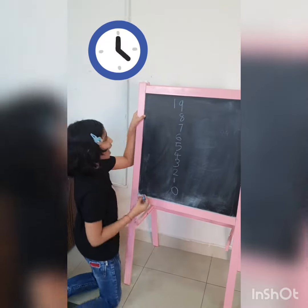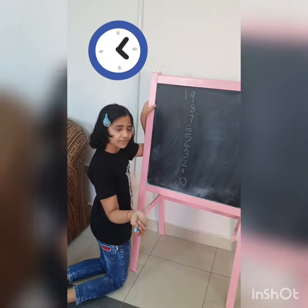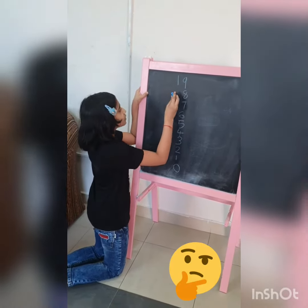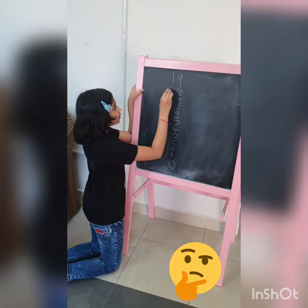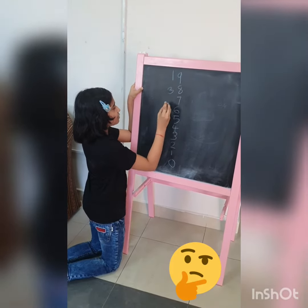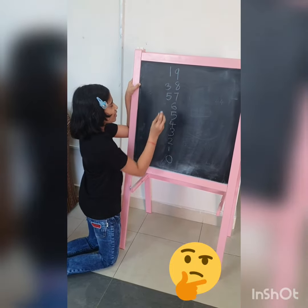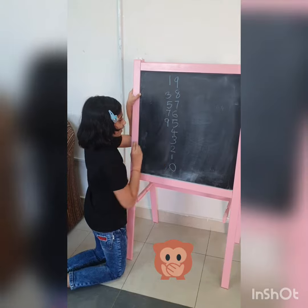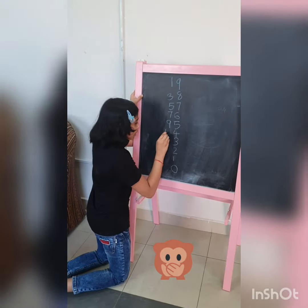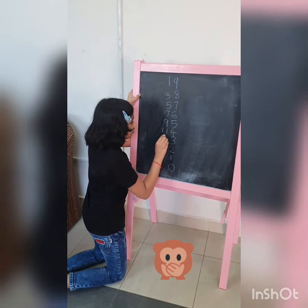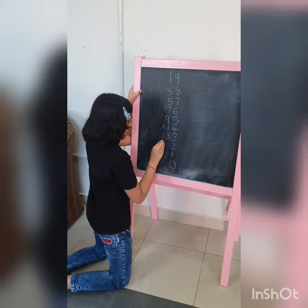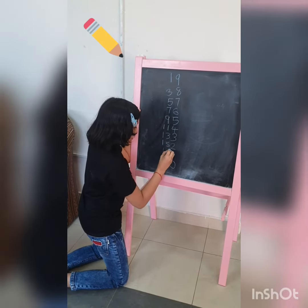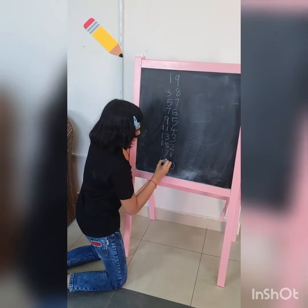Now we will add the number that comes after 1, which is 2. So the tens digits go: 1 plus 2 is 3, 3 plus 2 is 5, 5 plus 2 is 7, 7 plus 2 is 9, 9 plus 2 is 11, 11 plus 2 is 13, 13 plus 2 is 15, 15 plus 2 is 17, 17 plus 2 is 19.